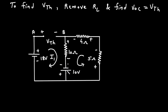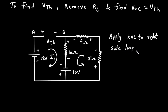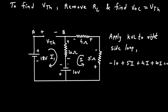Applying KVL to the right side loop, starting from this point: minus 10, then plus 5I1 plus 5I, then plus 4I, then plus 10I equals 0. Simplifying: minus 10 plus 19I equals 0, so 19I equals 10.